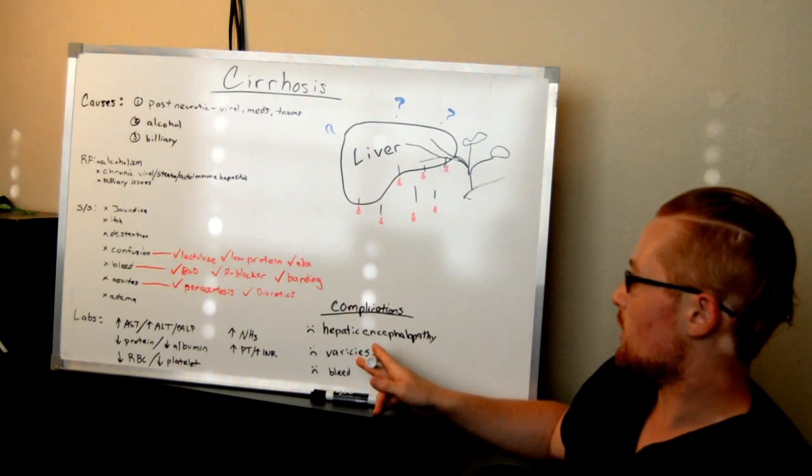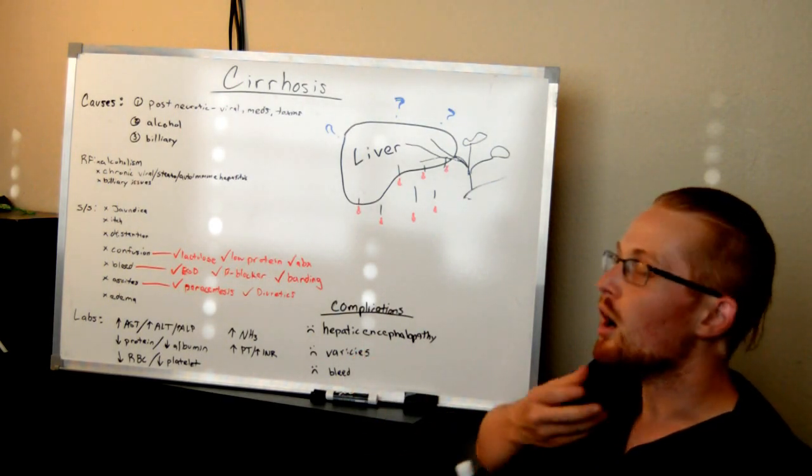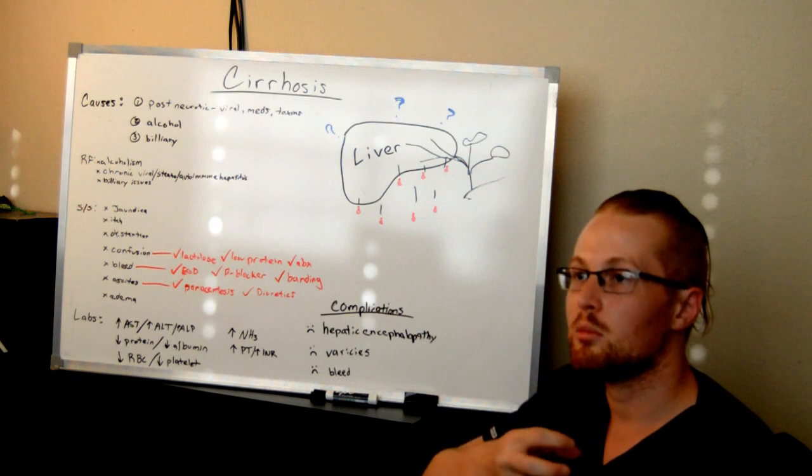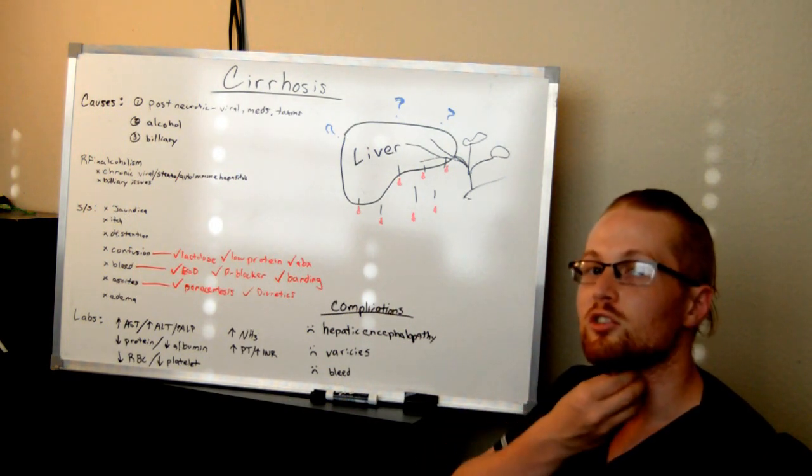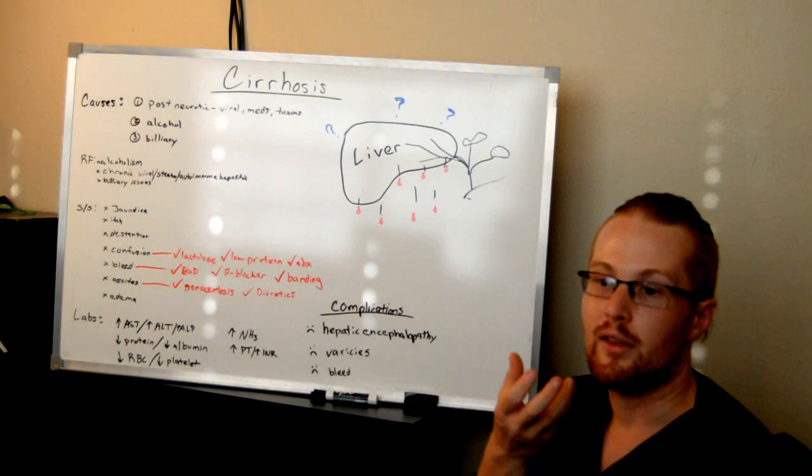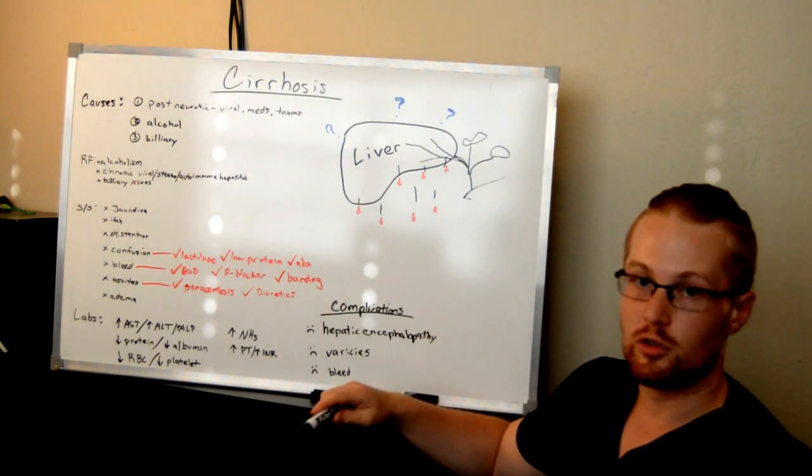Also the varices, which have to do with the blood being backed up so it causes the vessels in the esophagus to get enlarged and then they burst. So this is cirrhosis.